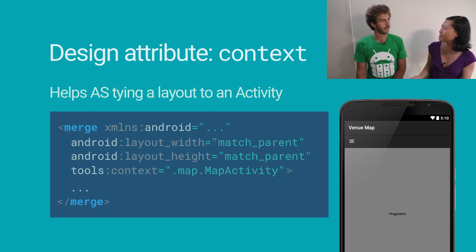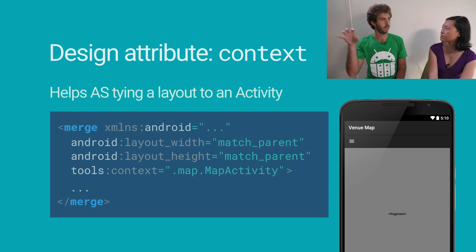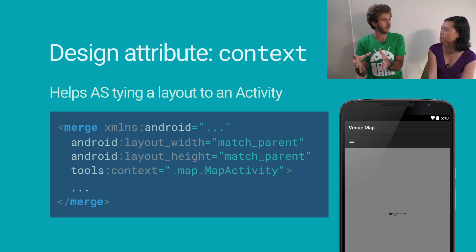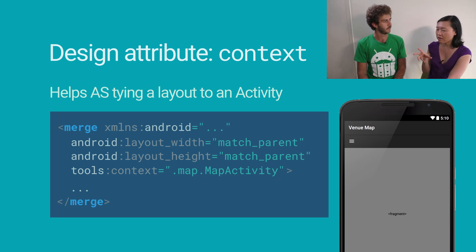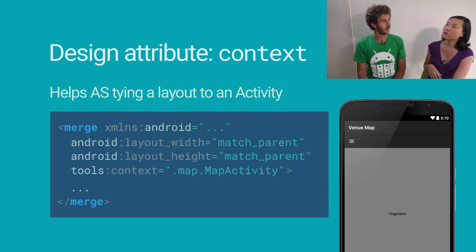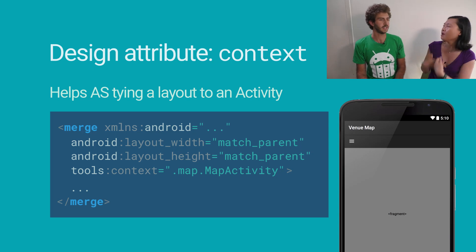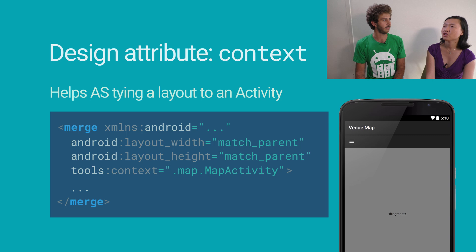You may have noticed in XML layouts there are attributes with the 'tools' namespace — like the auto-generated tools:context. That attribute is there so Android Studio can automatically pull info from the manifest and from the activity class — the appearance of the activity itself — so it can pick the correct theme for the preview. The layout XML itself does not have the theme attached to it.